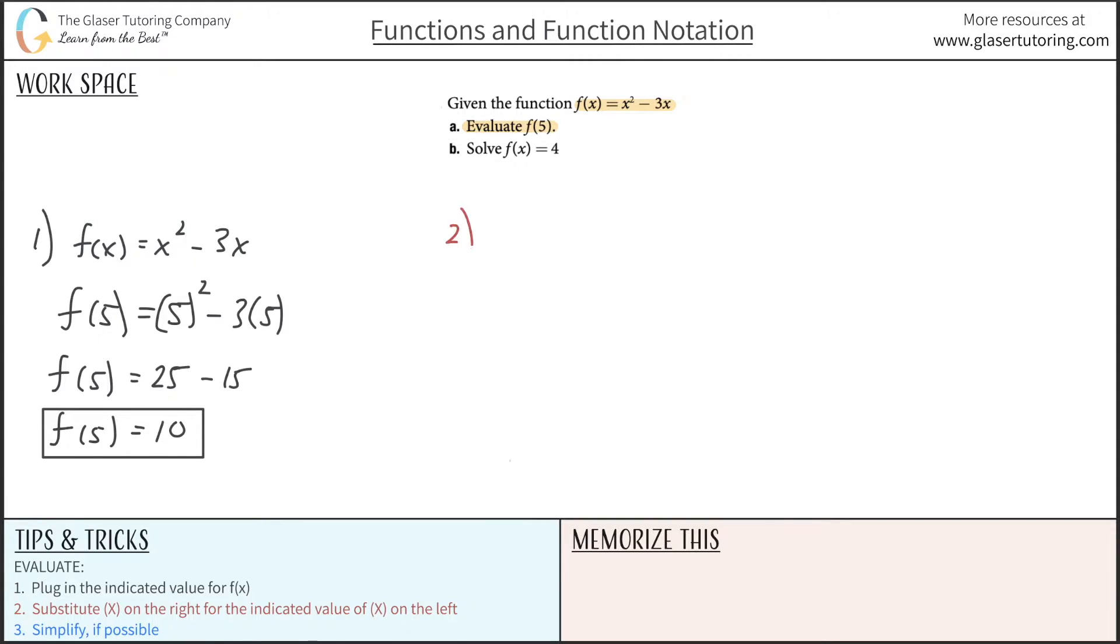Let's look at the second part now. So let's just rewrite the function. So we have f of x is equal to x squared minus 3x. And now what we are asked to do is we are now asked to solve f of x equals 4.